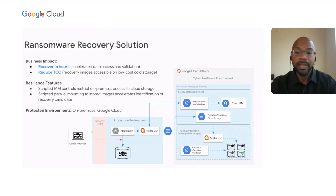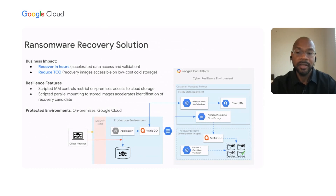Actifio can quickly capture application-consistent point-in-time data states using its efficient incremental forever technology, which drastically minimizes the amount of data transferred and stored. When using incremental forever data capture, Actifio only takes a single full copy of the data, and from then forward, it efficiently captures and stores only the changed blocks, while still maintaining the capability to fully access and restore application-consistent data corresponding to any of the captured points in time.